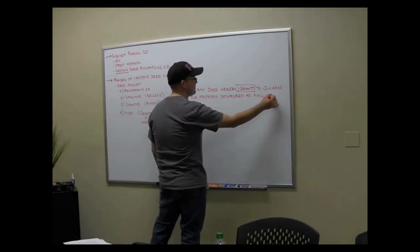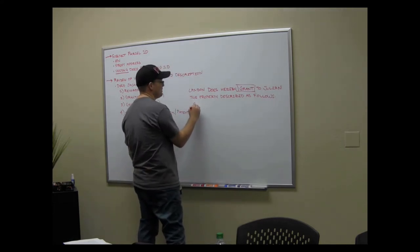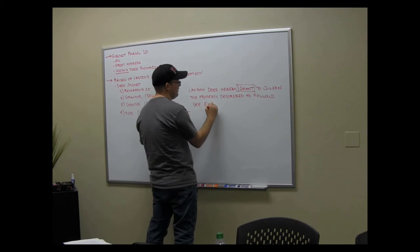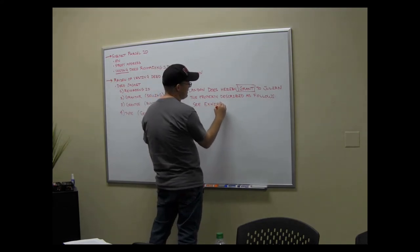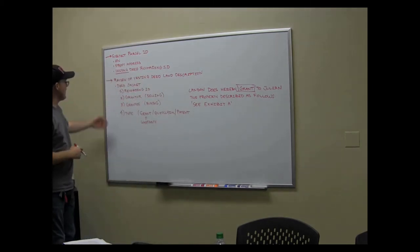If it's a grant deed, it'll say grant. If it's a quitclaim, it'll say it does hereby quitclaim to Julian. So sometimes you have to look at that. And then it usually says the property described as follows, and it'll have the little paragraph, but more commonly in a modern deed, it'll say C Exhibit A or B or C, but it's usually Exhibit A. That's all in the deed jacket.